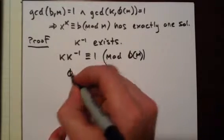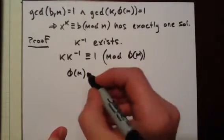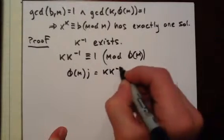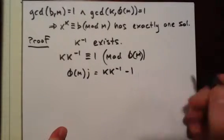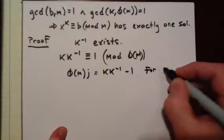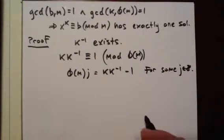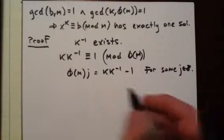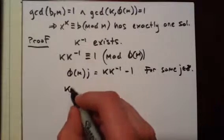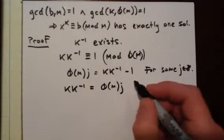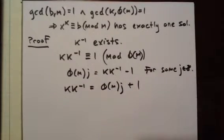This says φ(m)·j = k·k^(-1) - 1 for some integer j. We can rewrite this and say k·k^(-1) = φ(m)·j + 1.